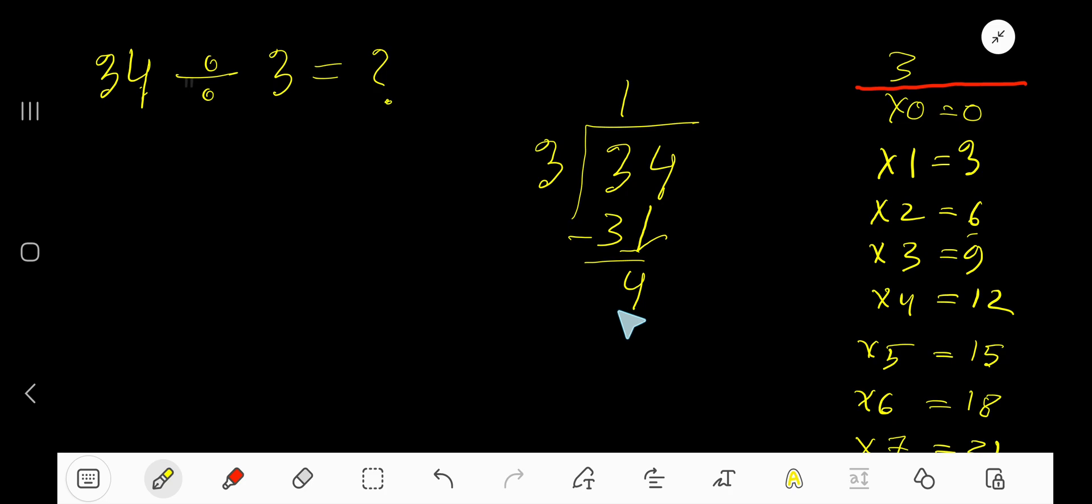That means 4. 3 goes into 4 how many times? 2 times is 6, which is too much, so we stop at 1 time. 1 times 3 is 3. Subtract, we get 1 as the remainder. So our answer is 11 remainder 1.